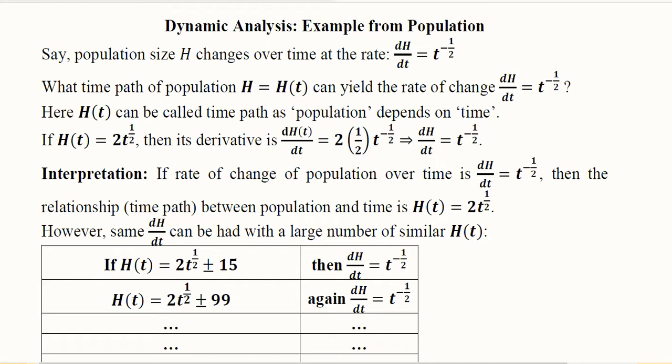In this video, we take an example from population and try to understand the foundation of dynamic analysis. This will also help us develop the rationale for introducing the constant of integration whenever we do integration. This example assumes that the population size is represented with h and it changes over time. The derivative of the population function is equal to t raised to the power minus 1 over 2.